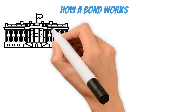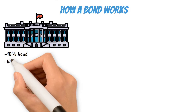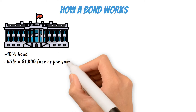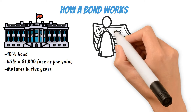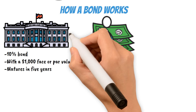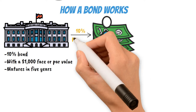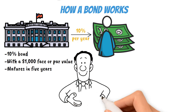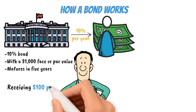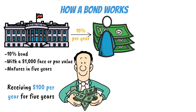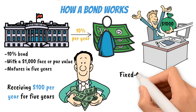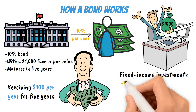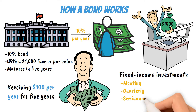Let's go over a quick example of how a bond works. The US government might issue a 10% bond — please let me know if they do — with a thousand dollar face or par value that matures in five years. If I were to buy the bond for a thousand dollars, then over the course of the five years the government will pay interest payments based on the rate of 10% per year, which will lead to me receiving a hundred dollars per year for five years. At the end of the five years I will also be paid back the thousand dollars I had initially invested. Investors may also find fixed income investments that pay the coupon payments monthly, quarterly, or semi-annually.